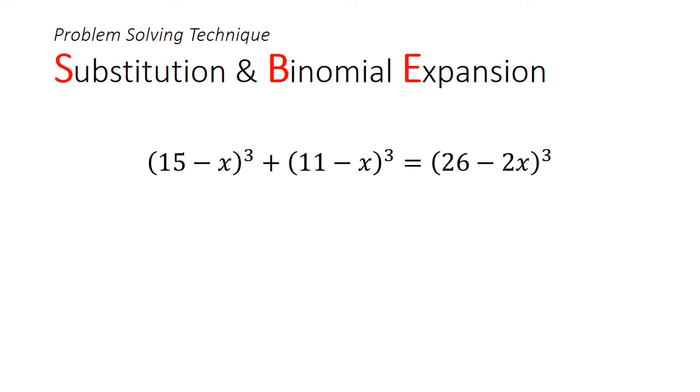Let's go into the solution. Now before you do some trigger happy expansions here, it would be a good idea to make a useful observation. Notice that (15-x) plus (11-x) nicely gives you (26-2x). So we could possibly simplify this problem with some nifty substitution. If we let a equals (15-x), b equals (11-x), and (a+b) will be equals to (26-2x).